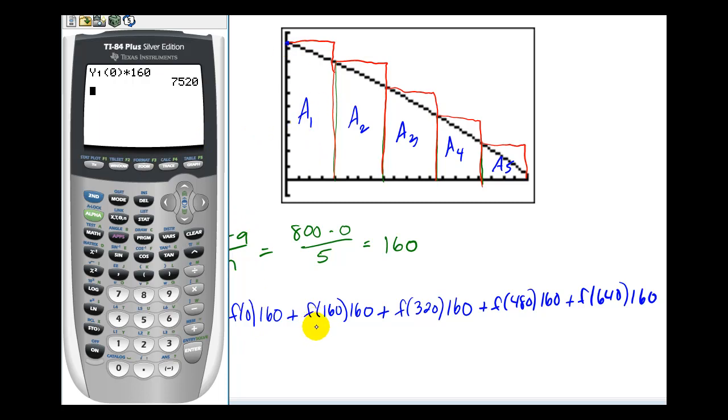The area of the next rectangle will be f of 160 times 160. Instead of selecting y1 each time, if I press second, enter, I can just edit the previous entry. So I'll change this to y1 of 160 times 160.